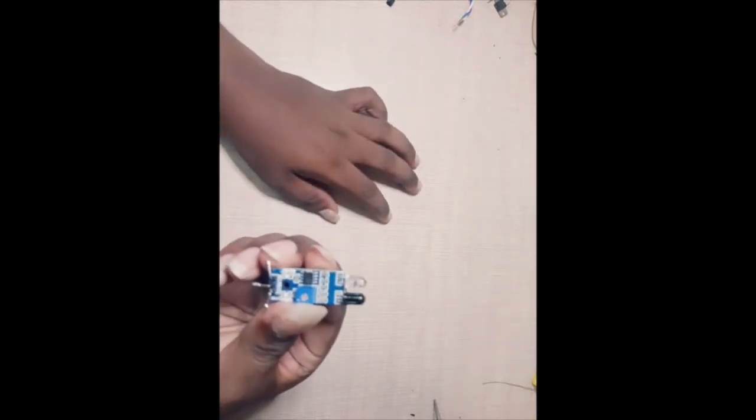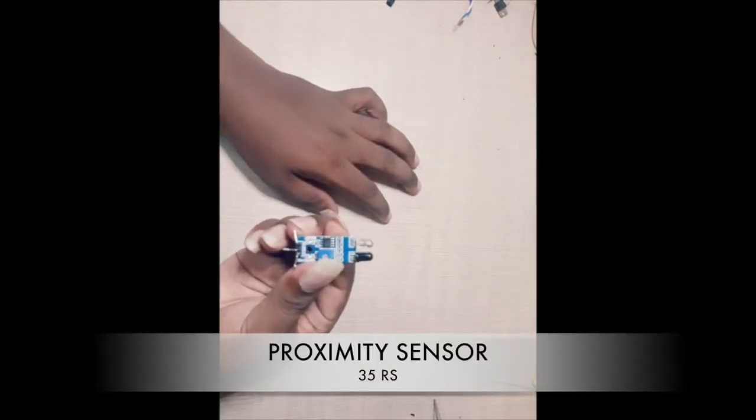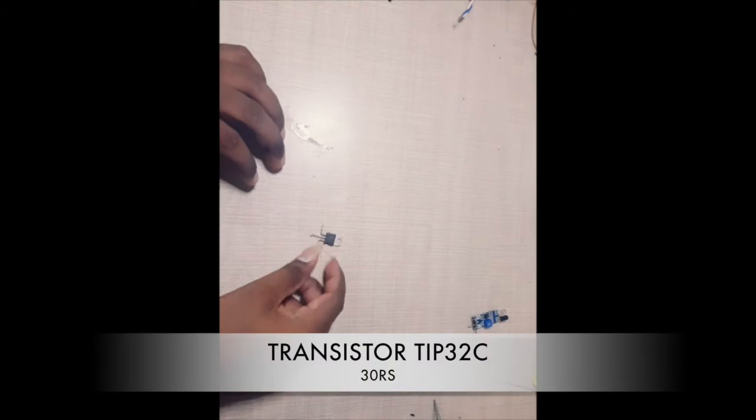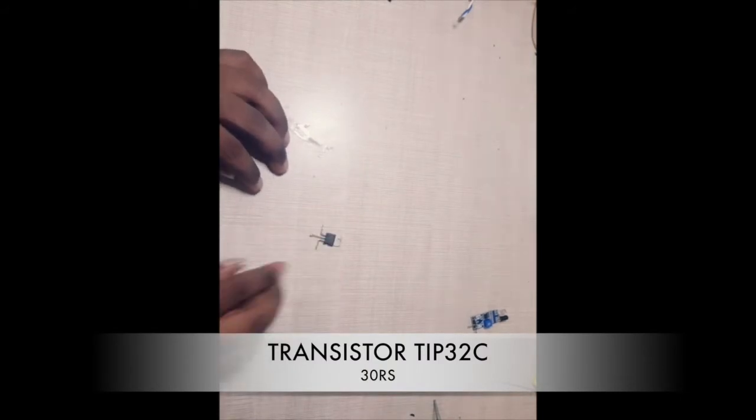I have the proximity sensor, the price is 35 rupees. And the transistor TIP32C with the cost around 30 rupees. And the resistance, 1 kilo ohm, cost is just 1 rupee.